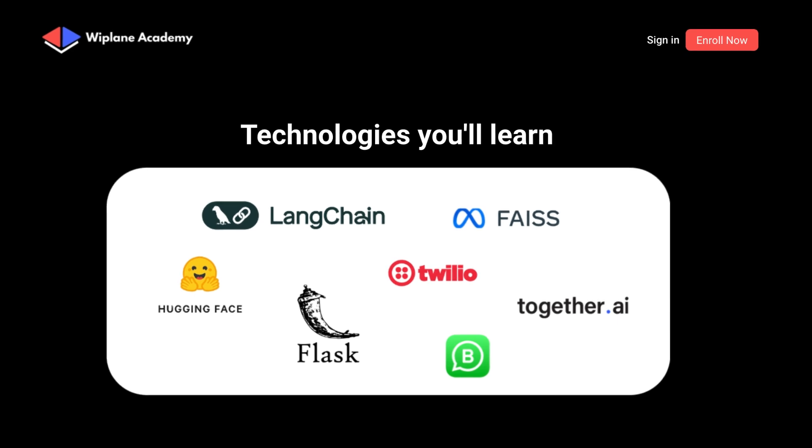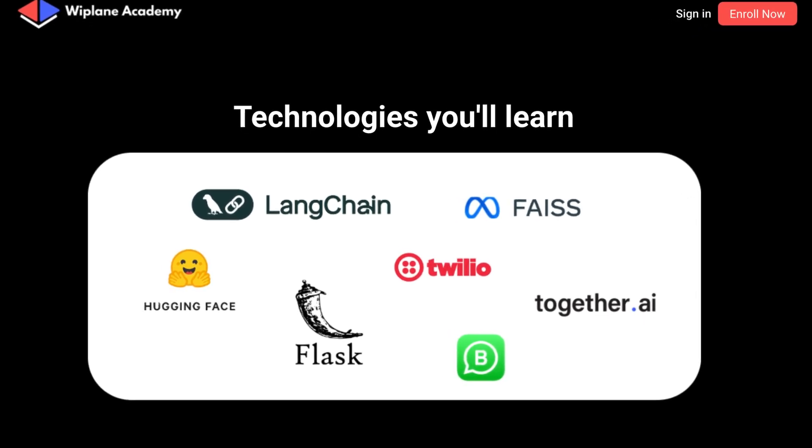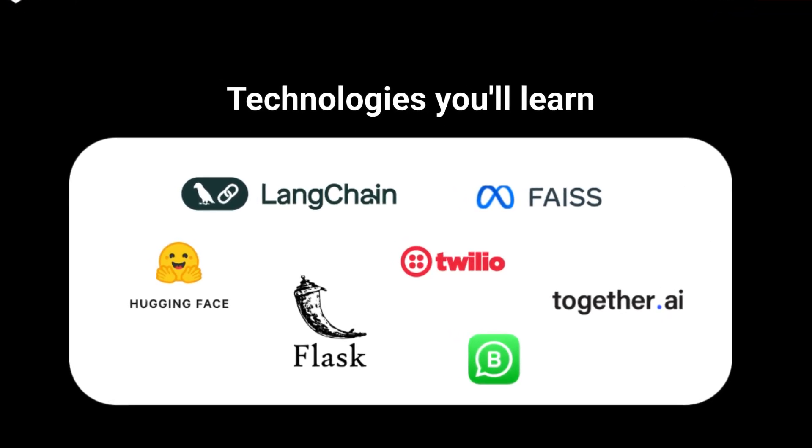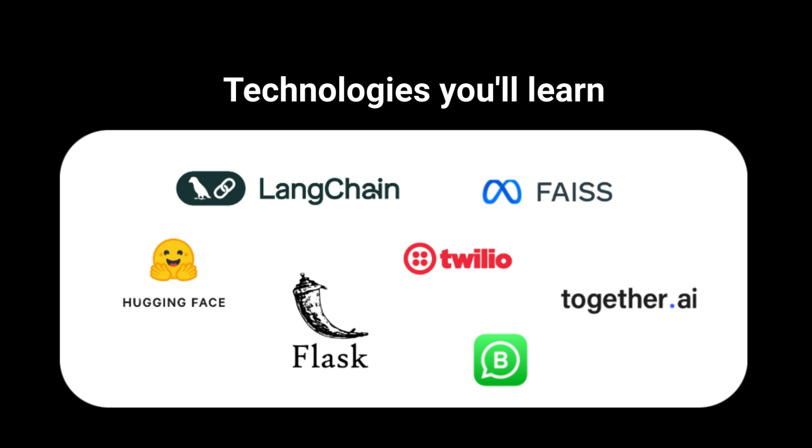We'll use free and open source tools like Langchain, HuggingFace, Together AI's free credits, and of course WhatsApp. So if you are a programmer and you're looking for a good project to build with AI, you've come to the right place. I have priced this course affordably to make it accessible to everyone. So all you have to do now is enroll and start building with AI.